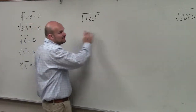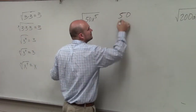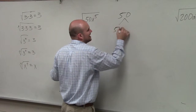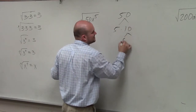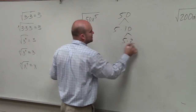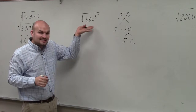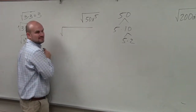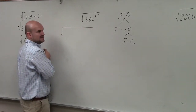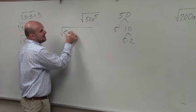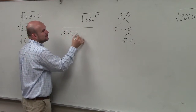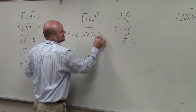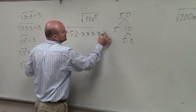So to break down 50, we can take 50 here. And I can do this as 5 times 10. And then 10 is 5 times 2. Then I can break x to the fifth as x times x times x times x. So I can write 5 times 5 times 2 times x times x times x times x.